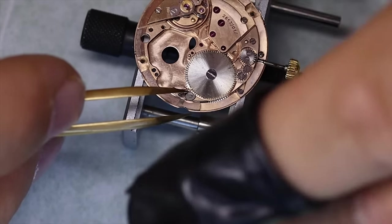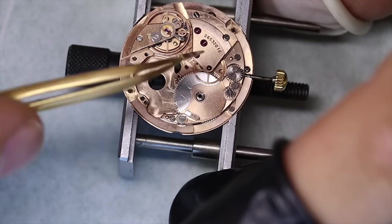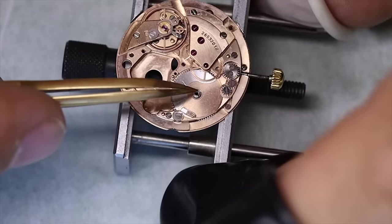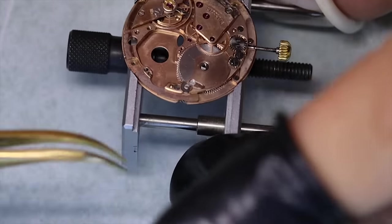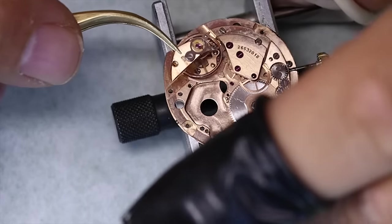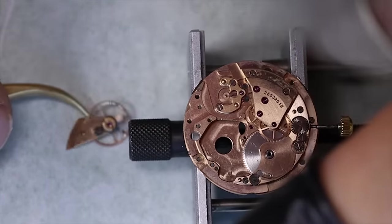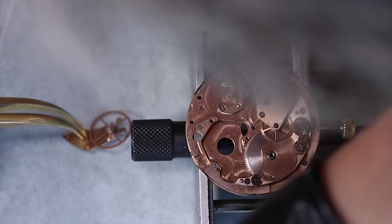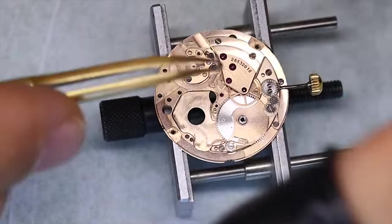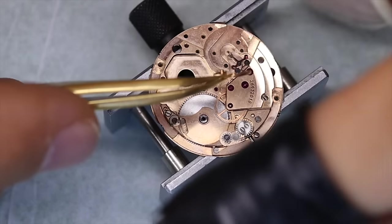So we took the automatic module off and we can wind down the mainspring. Now Omega are absolutely not known for ultra thin watches. And to be honest not a lot of manufacturers are. It was a little bit of a fad a couple of times in history. Last time in the early 70s. And this watch is from 1968. So that sort of fits that picture.